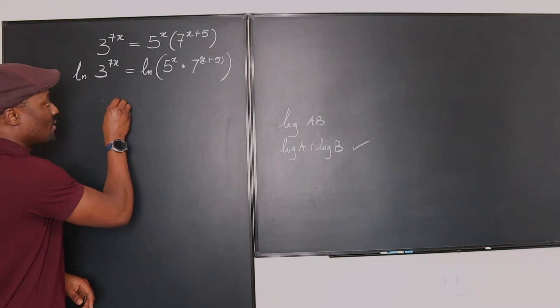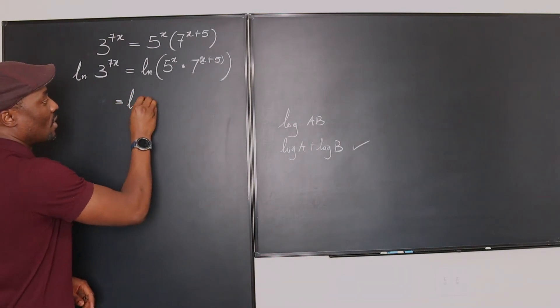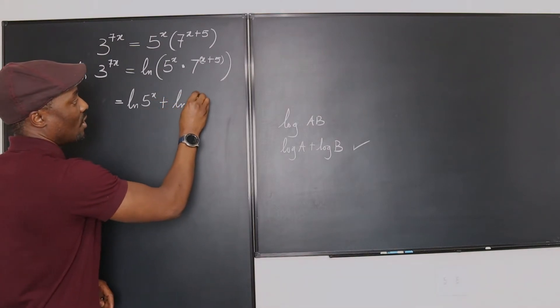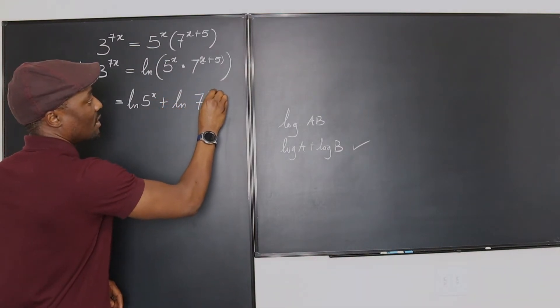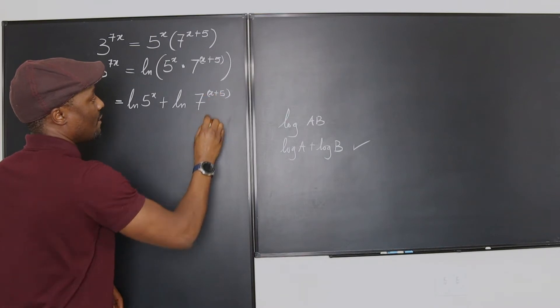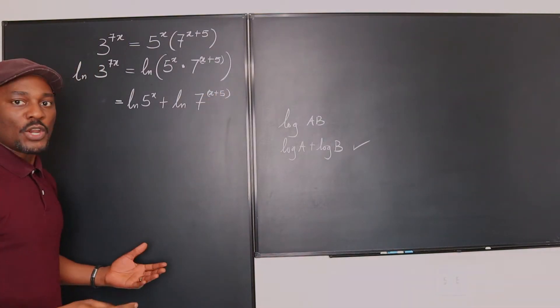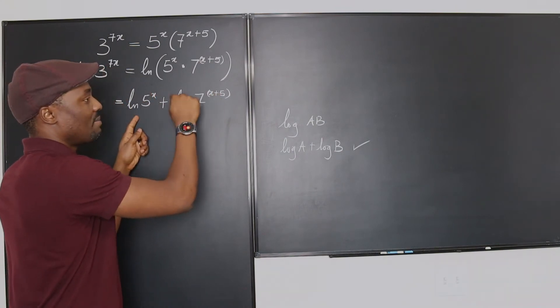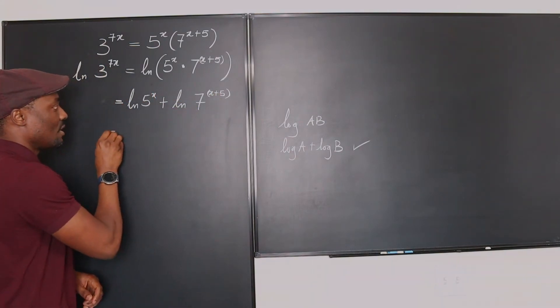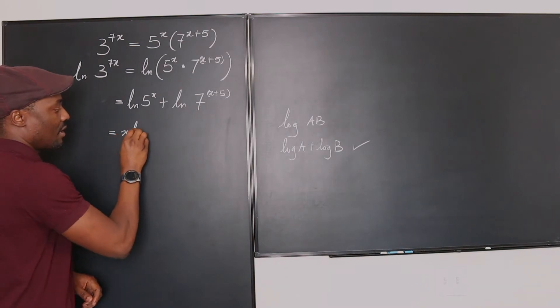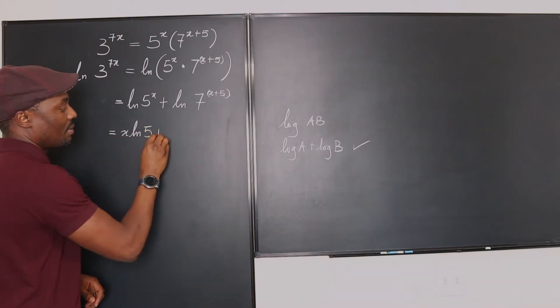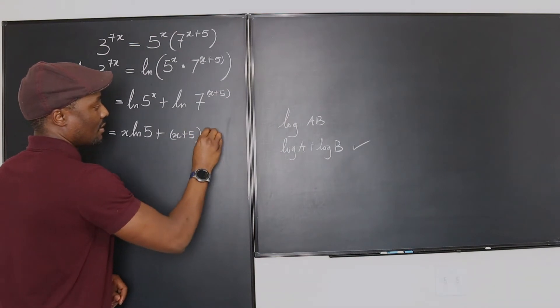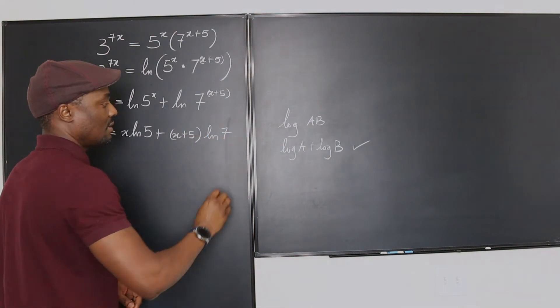So this tells us that this is equal to the natural log of 5 to the x plus the natural log of 7 to the x plus 5. So because we know how logarithm works, you can now take this back here, take this back here, and that gives you, this is equal to x ln 5 plus x plus 5 ln 7.